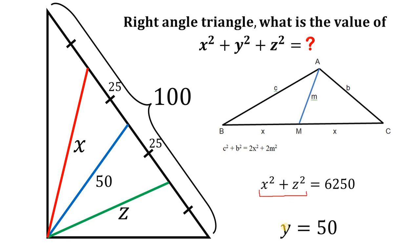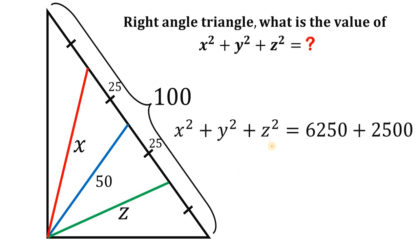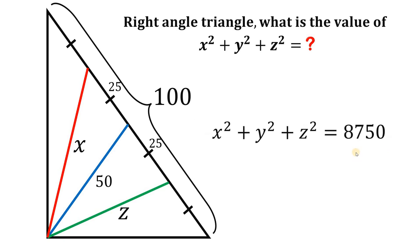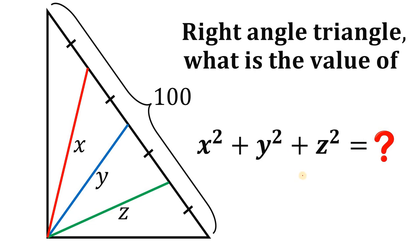We now have x squared plus z squared equals 6,250, and we know that y equals 50. To find x squared plus y squared plus z squared, we square y: 50 squared equals 2,500. Adding the two equations, x squared plus y squared plus z squared equals 6,250 plus 2,500, which gives us 8,750. Therefore, the value of x squared plus y squared plus z squared is 8,750.